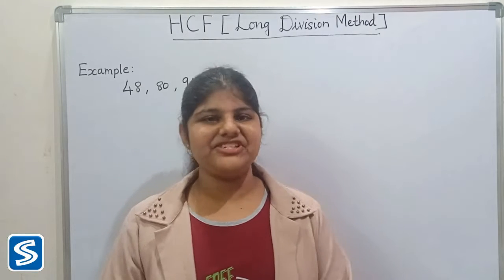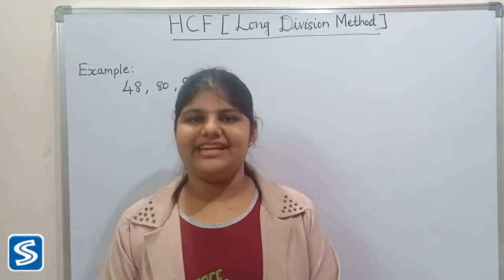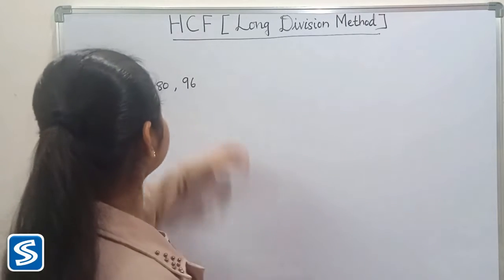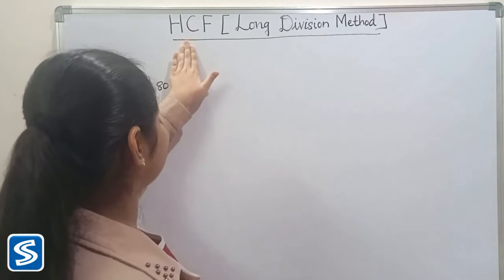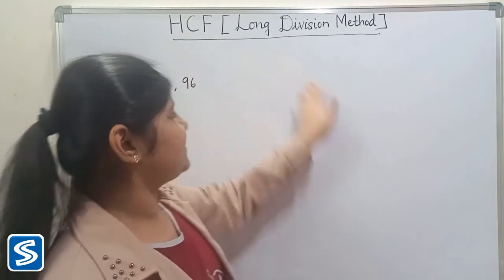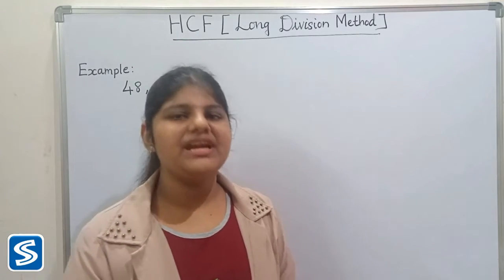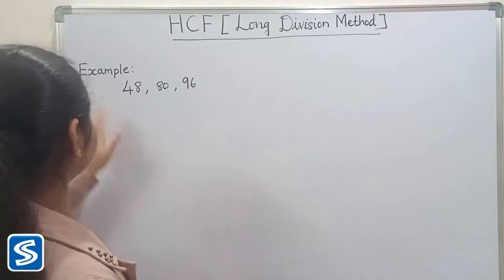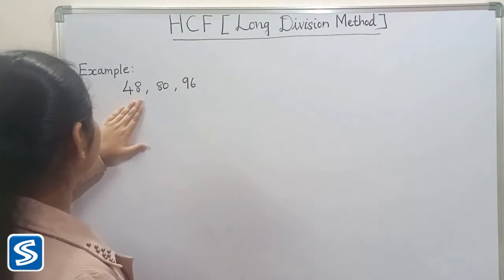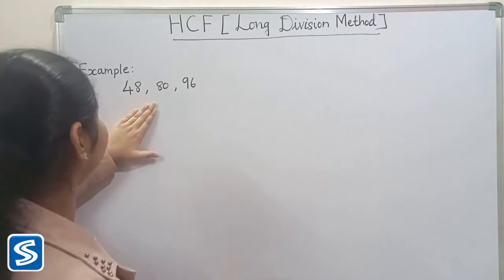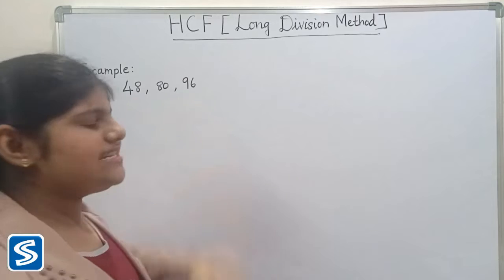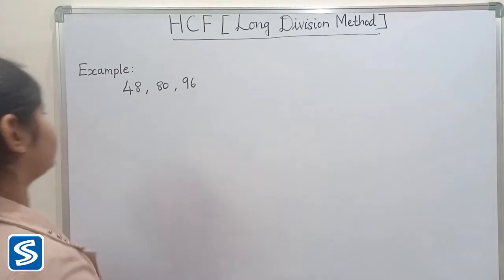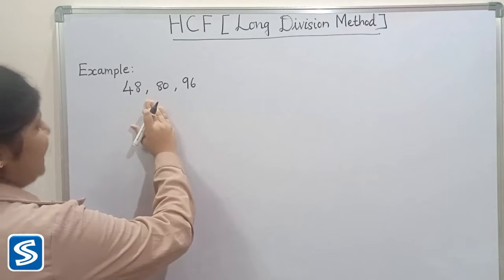Hi friends, welcome to So Much channel. In this video I am going to teach how to find HCF using the long division method. For example, we can take: find HCF of 48, 80, and 96. First we have to choose any two numbers.